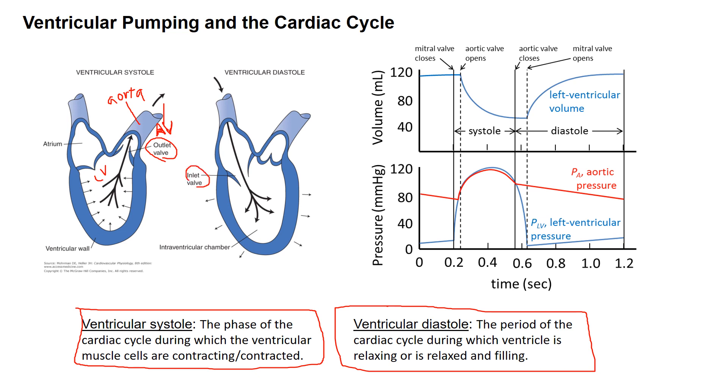We can look at these processes in terms of the pressure and volume in the left ventricle as functions of time over the cycle. In this plot, we're starting in diastole. The pressure in the ventricle is low, a few millimeters of mercury, and the volume is high, here about 120 milliliters. When systole starts, several things happen relatively quickly.